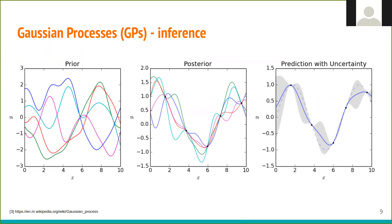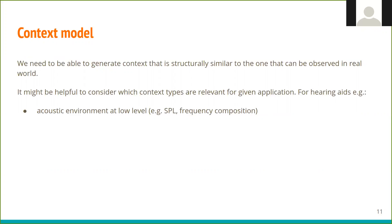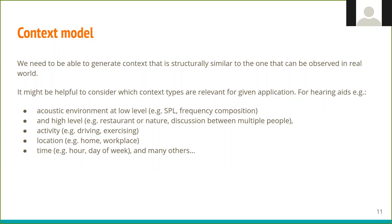I will now talk about context and user models and how we can use them to generate meaningful preferences. We need to be able to generate context that is structurally similar to the one that we can observe in the real world. It might be helpful to consider which context types are actually relevant for a given application. For example, in hearing aid domain, we might consider acoustic environment at low level, such as frequency composition, or high level, such as restaurant or nature sounds. We can consider activity, location, or even time.